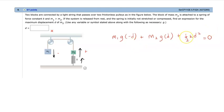So with this knowledge, I can rearrange this equation to be M1GD which is equal to M2GD plus 1 over 2 KD squared.